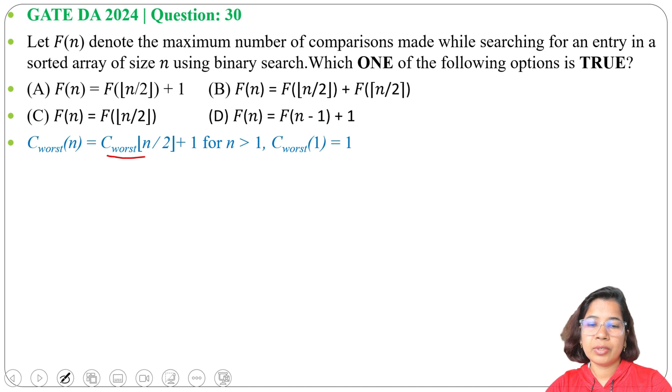For n greater than 1 and C worst 1 equals to 1. So in case of binary search we have a sorted sequence. Every time we compare with the middle element. Suppose we have a sequence and we are searching for 4.